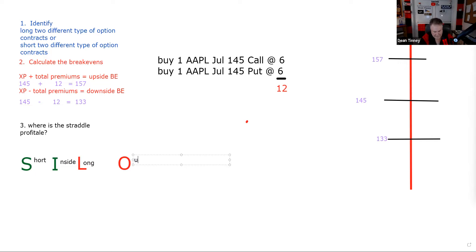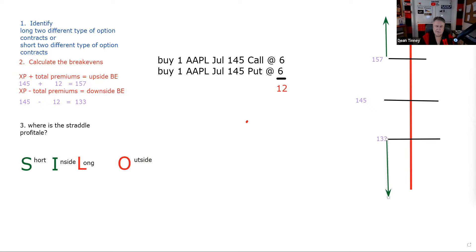This is a long straddle. So we want Apple to be above $157 or below $133 — that's where it's profitable. It will be unprofitable between $133 and $157. The worst closing price at expiration would be $145. For a short straddle, we want Apple in between — short inside, long outside. If I just change buy-buy to sell-sell, it's the same break-even; it's just a matter of where you want it. SILO is a good way to remember that.